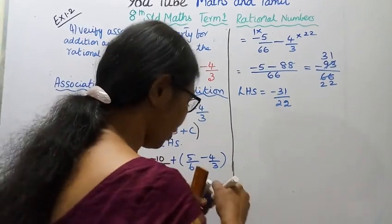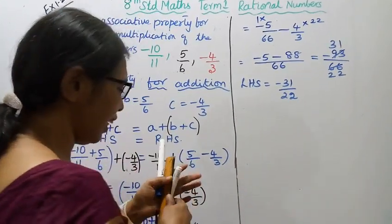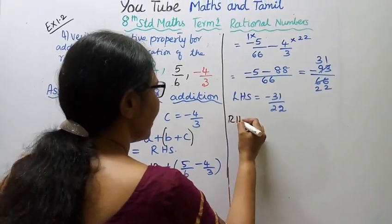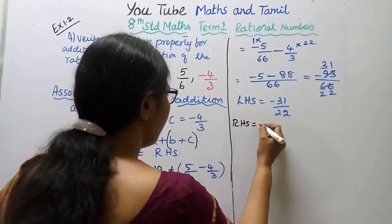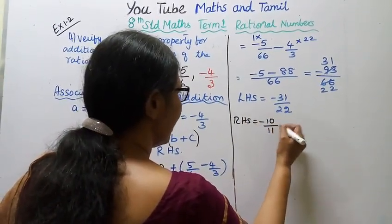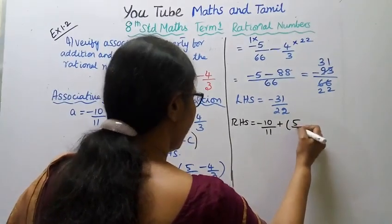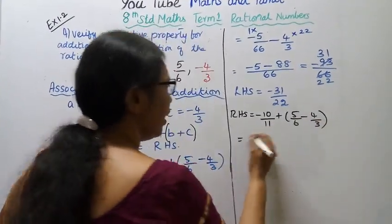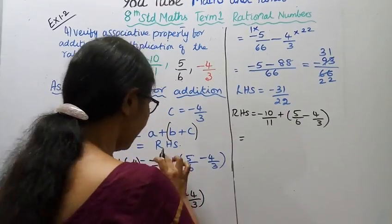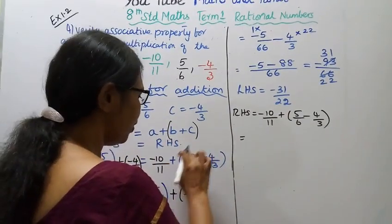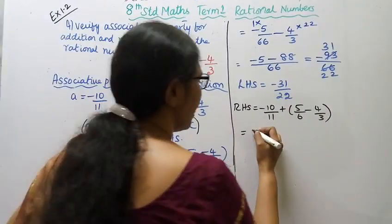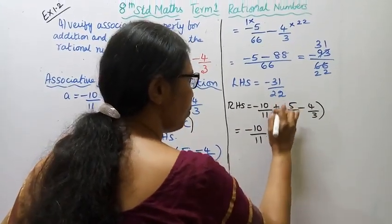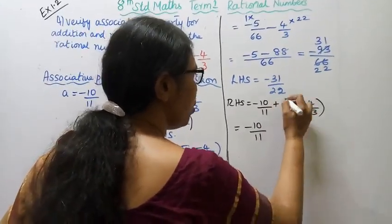Now right hand side. Right hand side: minus 10 by 11 plus bracket 5 by 6 minus 4 by 3. First solve the bracket: 5 by 6 minus 4 by 3.